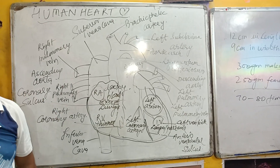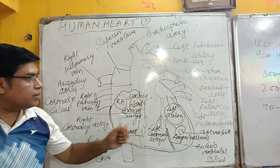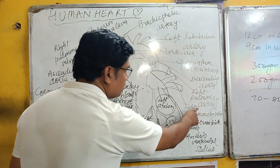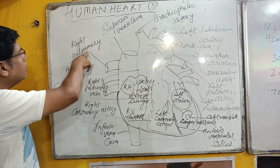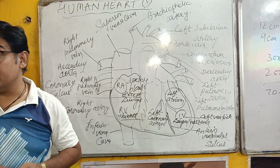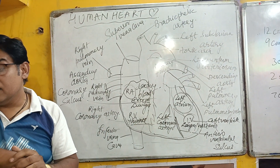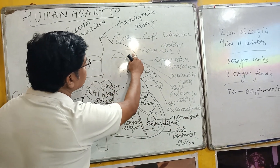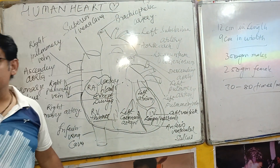The left and right pulmonary arteries carry deoxygenated blood. The left ventricle gives rise to the aorta.